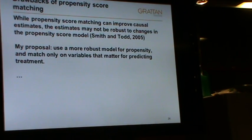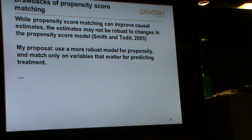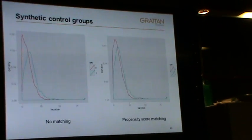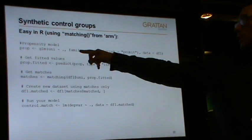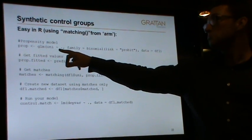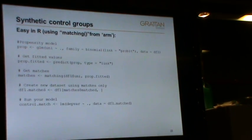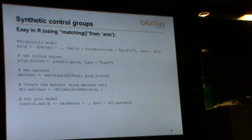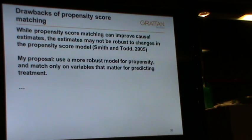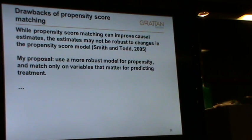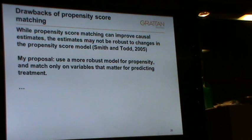There are some pretty big issues with propensity score matching — it's not exactly in favour in academia. Basically, the propensity model you use matters: if you change those independent variables, your matching is completely different and your estimates are completely different. It's not a very robust model. The Smith and Todd paper essentially destroys the Heckman and Hotz paper, which was the main one proposing propensity score matching as a solution.